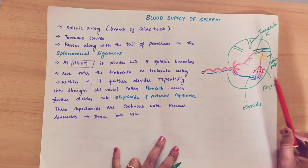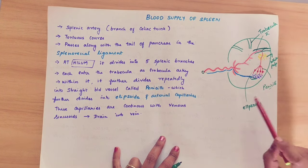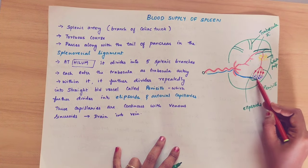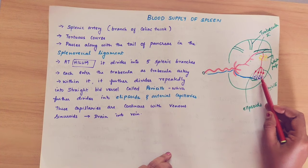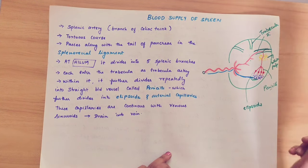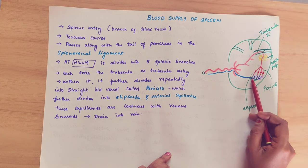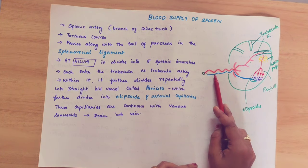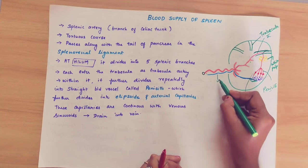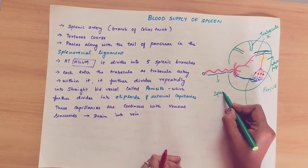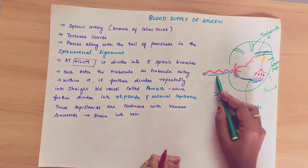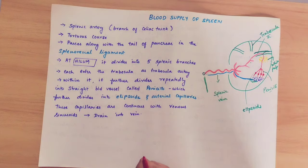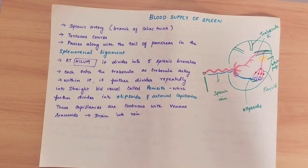The venous sinusoid is a type of capillary whose lumen allows a little leakage. Blood drains through the red pulp into the venous sinusoids. The venous sinusoids form splenic veins, and the splenic vein then joins the superior mesenteric vein to form the portal vein. This is how the circulation goes.